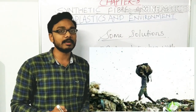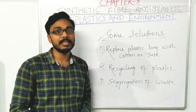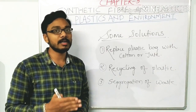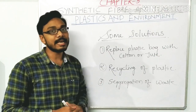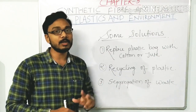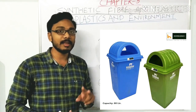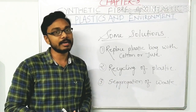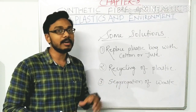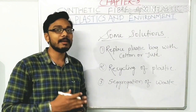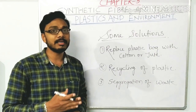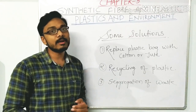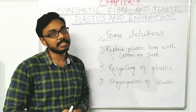The next solution is recycling of plastic — we should use plastics that can be recycled. The third solution is segregation of waste. The municipality has given us two bins: the blue bin and the green bin. In one we collect biodegradable waste and in the other non-biodegradable waste, making it easy to segregate and recycle as efficiently as possible.